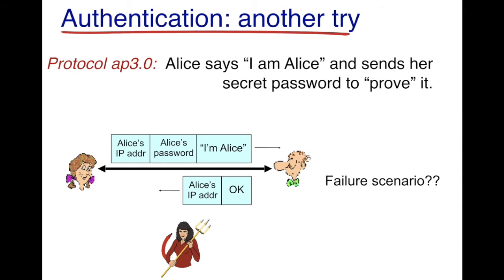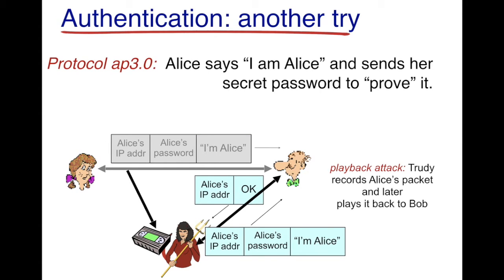Let's refine the protocol again — version 3.0. Alice inserts a secret password in the message along with her IP address and sends this to Bob. Bob verifies the information and replies with an okay. But the same failure scenario can apply. What Trudy could do is record the message sent from Alice to Bob and then later play it back to Bob. This is a playback attack, and it's slightly different from the previous spoofing attack.